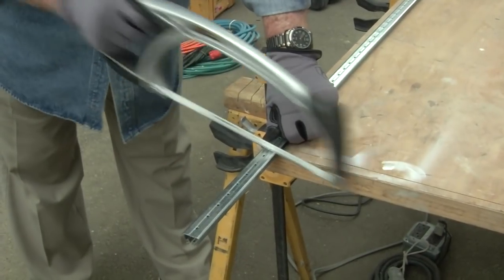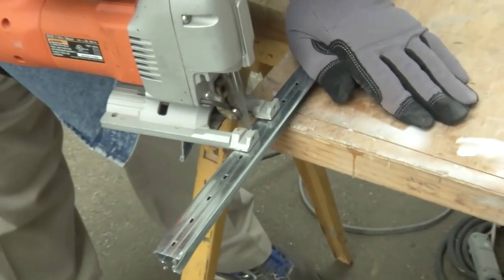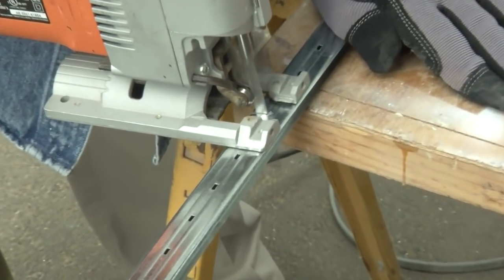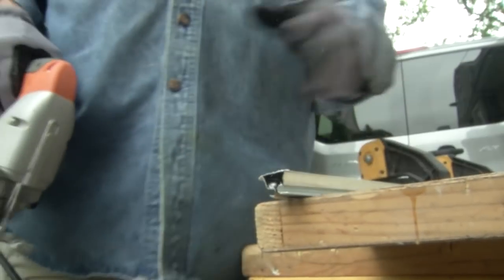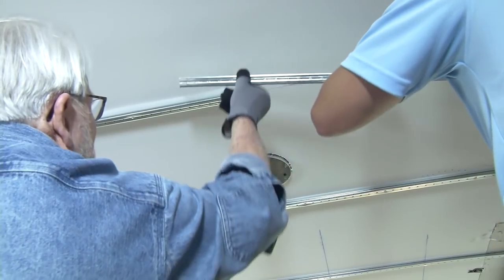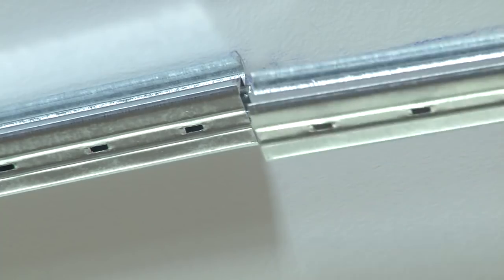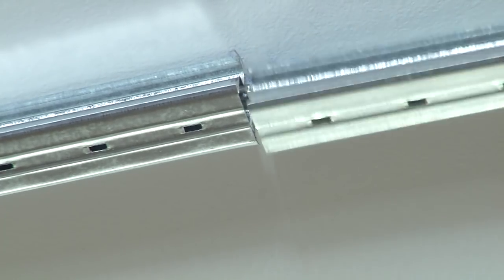If it is necessary or preferable to cut the track, it can be done easily with a hacksaw or a jigsaw fitted with a metal cutting blade. The two sections are butted together, with both ends being screwed into a joist.